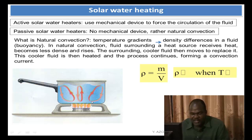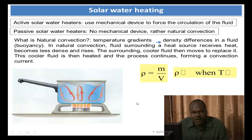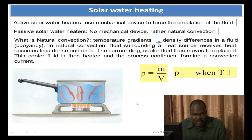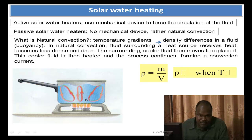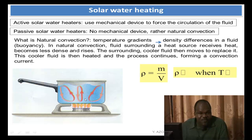We have all at one point in our life heated water. And you could see that when you start heating the water, before it boils, you see some currents moving inside — that's natural convection. Natural convection takes place when there is no mechanical device used to circulate the fluid. Assuming you take a spoon and start stirring the water inside the pan, in that case it's no longer natural convection but forced convection, because you are using a mechanical device — in this case, a spoon — to force the circulation of the water.